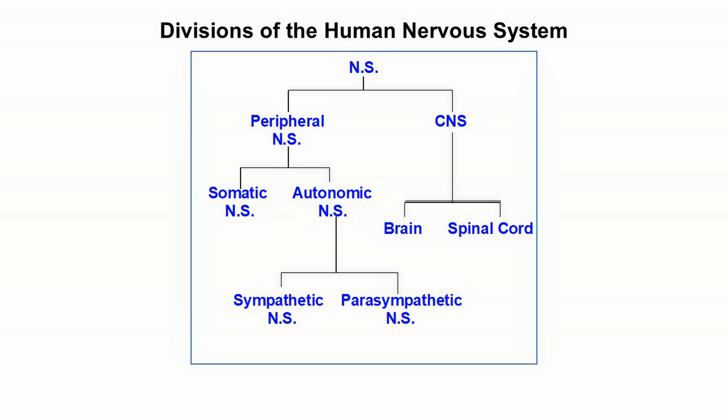Our focus here is on the human nervous system. I've put a diagram of the human nervous system into your PowerPoint presentation, and I want you to know this diagram. NS represents nervous system, and the human nervous system is divided into two parts: the peripheral nervous system and the central nervous system. You may already know that the central nervous system is composed of the brain and spinal cord.